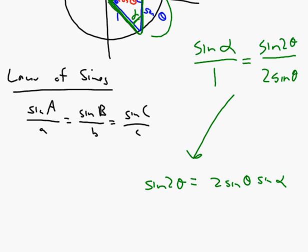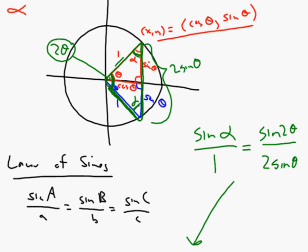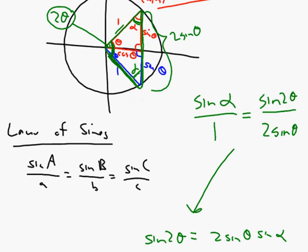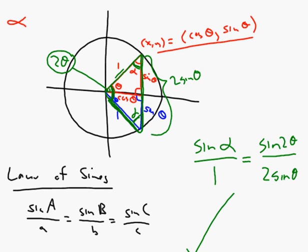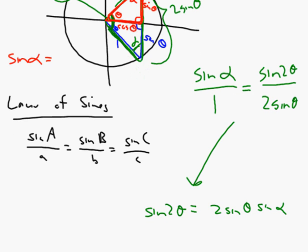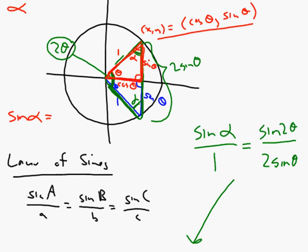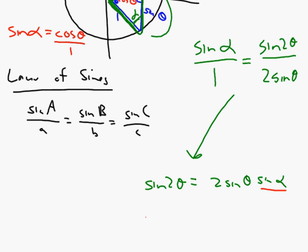There's only one thing I'm not crazy about — it has two different angles in it, and I'd like it to be just a function of one angle, just theta. So let's go back to the picture. Looking at the upper right red triangle, the sine of alpha would be the opposite side, which is cosine theta, over the hypotenuse, which is 1. So the sine of alpha equals the cosine of theta. Therefore: sine of 2 theta equals 2 sine theta cosine theta.